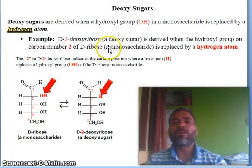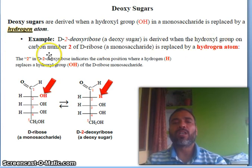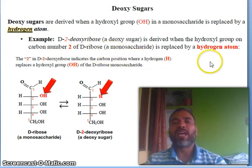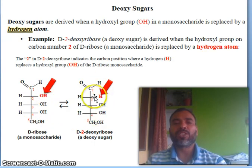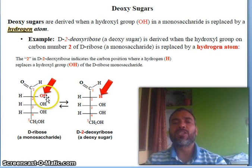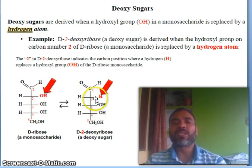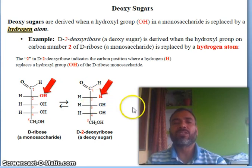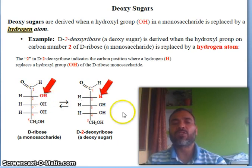So deoxy-ribose or deoxy sugar is derived when the hydroxyl group on carbon number 2 of D-ribose, a monosaccharide, is replaced by hydrogen atom. You know this structure is Fischer projections. What you did here is OH is replaced by H, means you have removed only one oxygen and it becomes deoxy. So this is oxy, this is deoxy. Just concentrate on this carbon and concentrate on this oxygen.